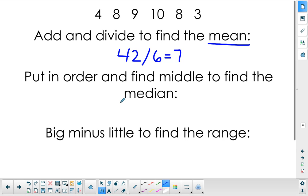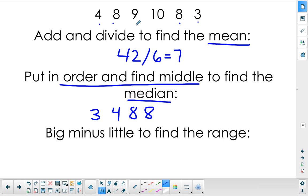Now we're going to find the median. We need to put our numbers in order and find the middle. I have 3, next comes 4, we have 2 8s, a 9, and then a 10. I'm looking for the middle here. 10 matches to 3, 4 matches to 9, so I'm left with 8 and 8 in the middle, which makes 8.